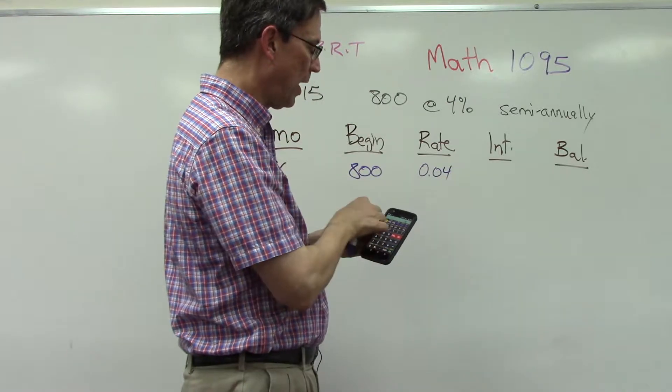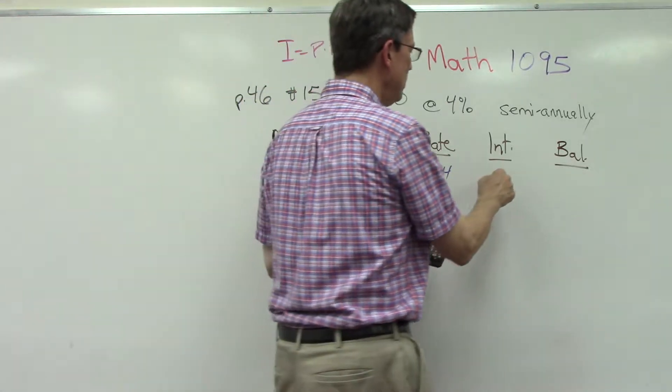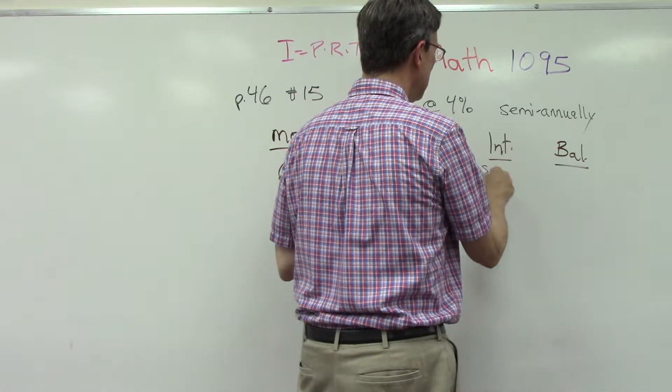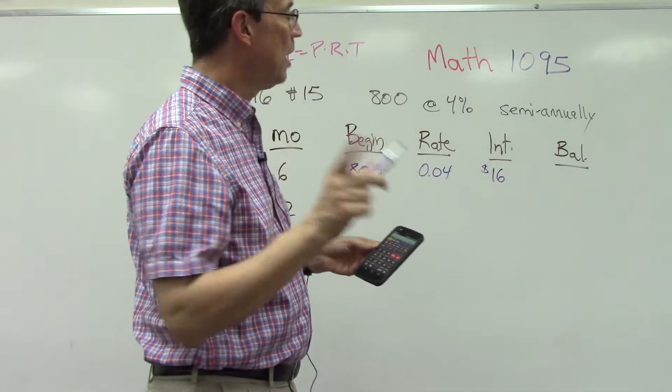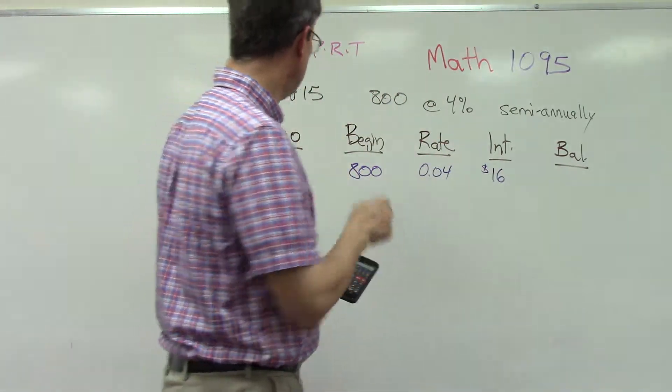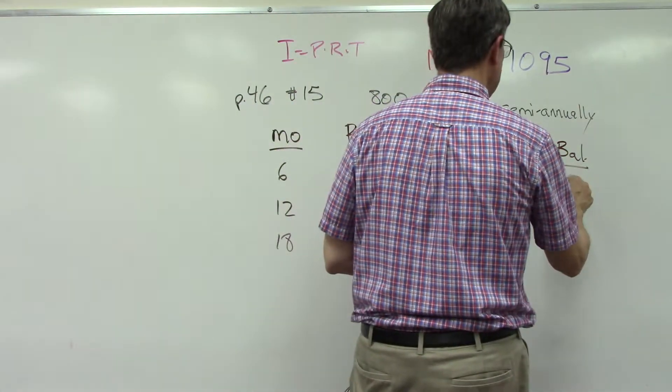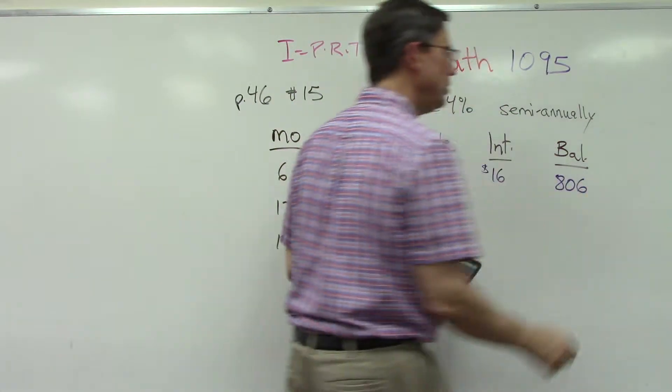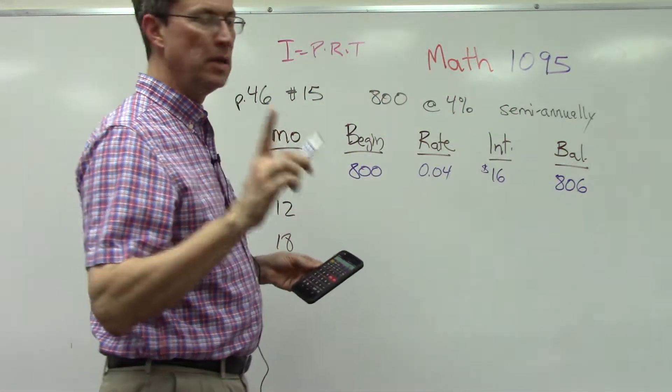So the interest is $16. Now my new ending balance at the end of six months is not $800, it's $816.